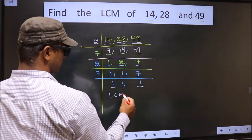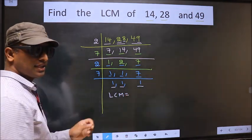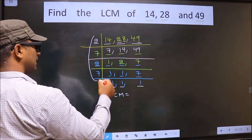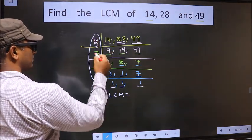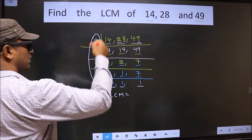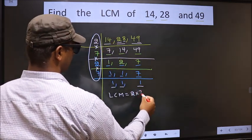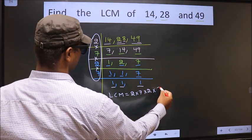So our LCM is the product of these numbers, that is 2 into 7 into 2 into 7.